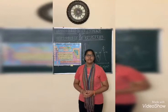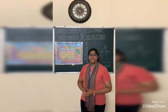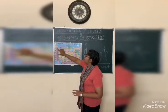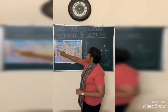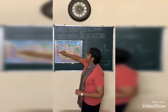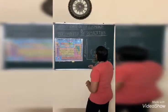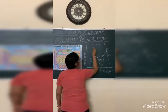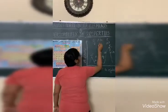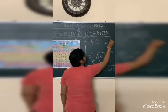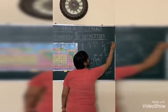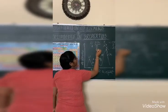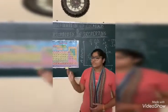Next is Döbereiner's Triad rule. Döbereiner said that elements form groups of three, and the middle element has the average atomic weight of the other two. For example, Lithium has atomic weight 7 and Potassium has 39. So for Sodium, x equals (39 + 7) / 2, which gives 23. So the atomic weight of Sodium is 23.